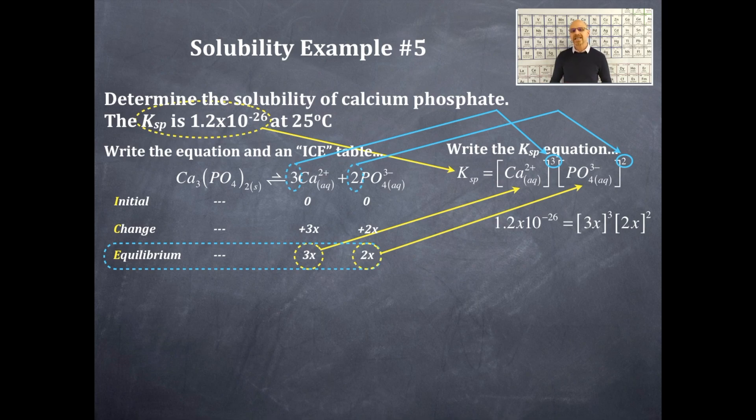Now 3 cubed is equal to what? That's 3 times 3, that's 9, 9 times 3, that's 27. And then it's 2 times 2, well that's 4.